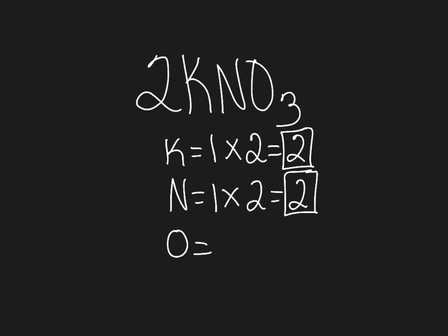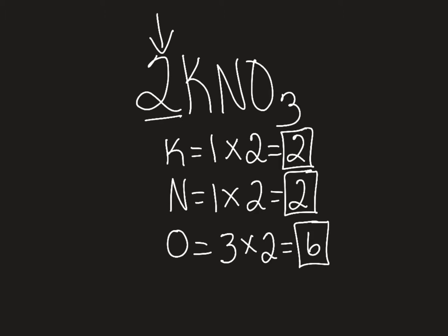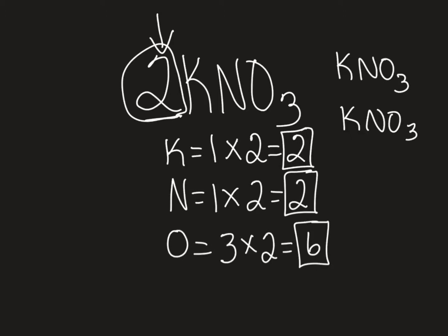Now with oxygen — oxygen has a subscript of three. We take that subscript of three and multiply it by the coefficient of two, giving us a total of six oxygens. What this coefficient of two is telling us is that we have two KNO₃s. So basically, when you're counting atoms, you have to multiply by the coefficient to get the total number of atoms present.